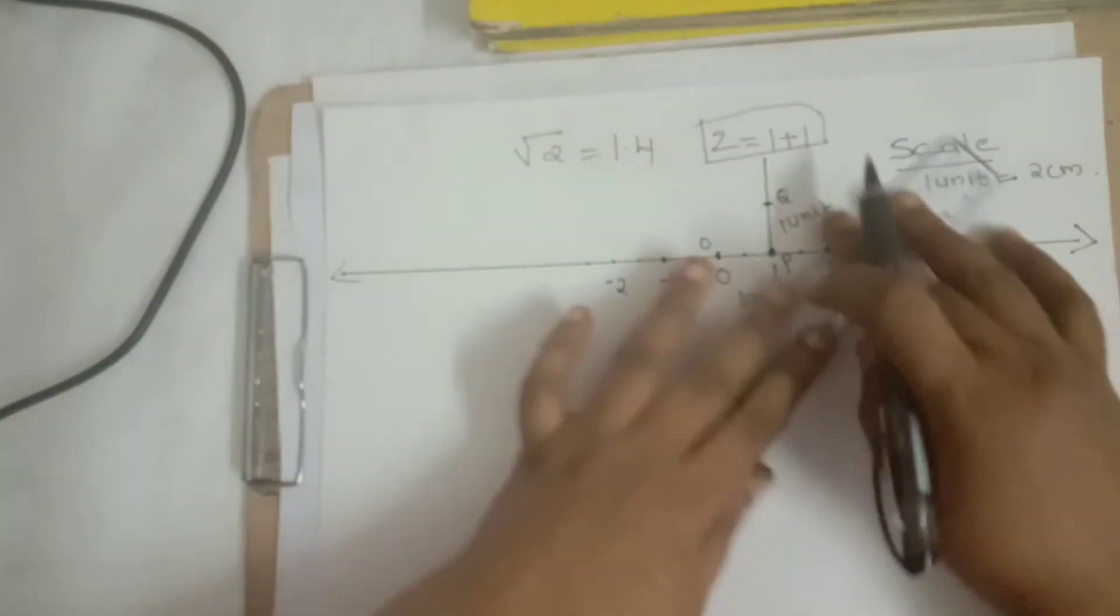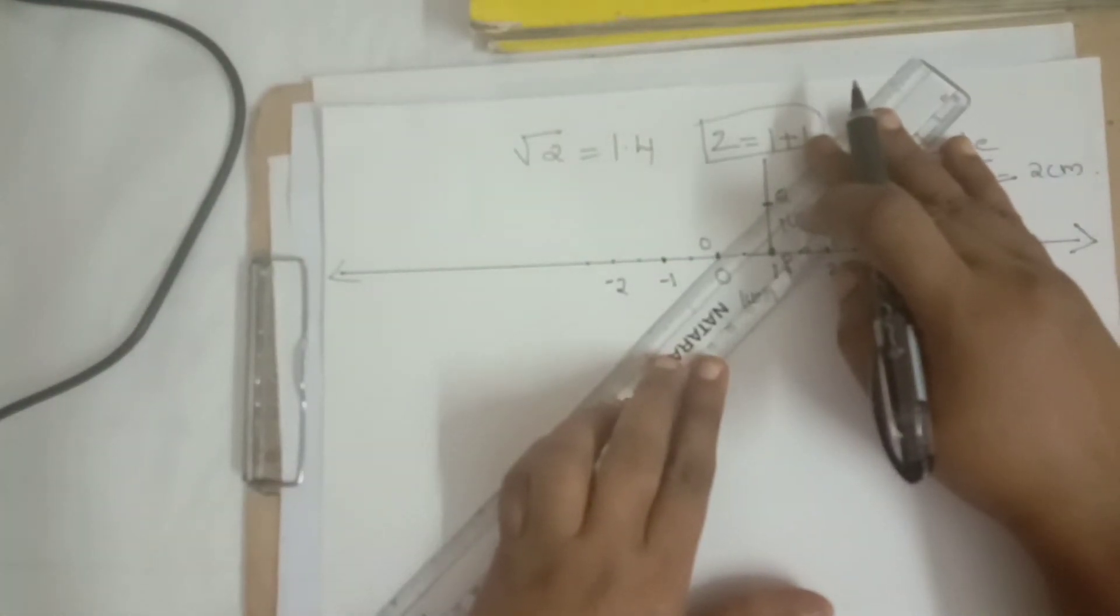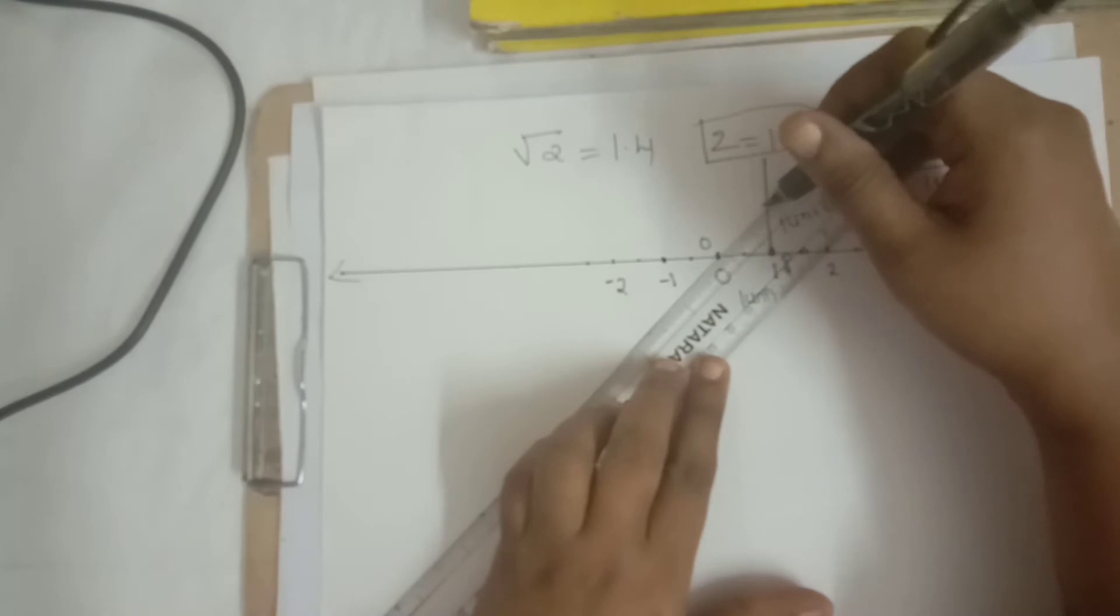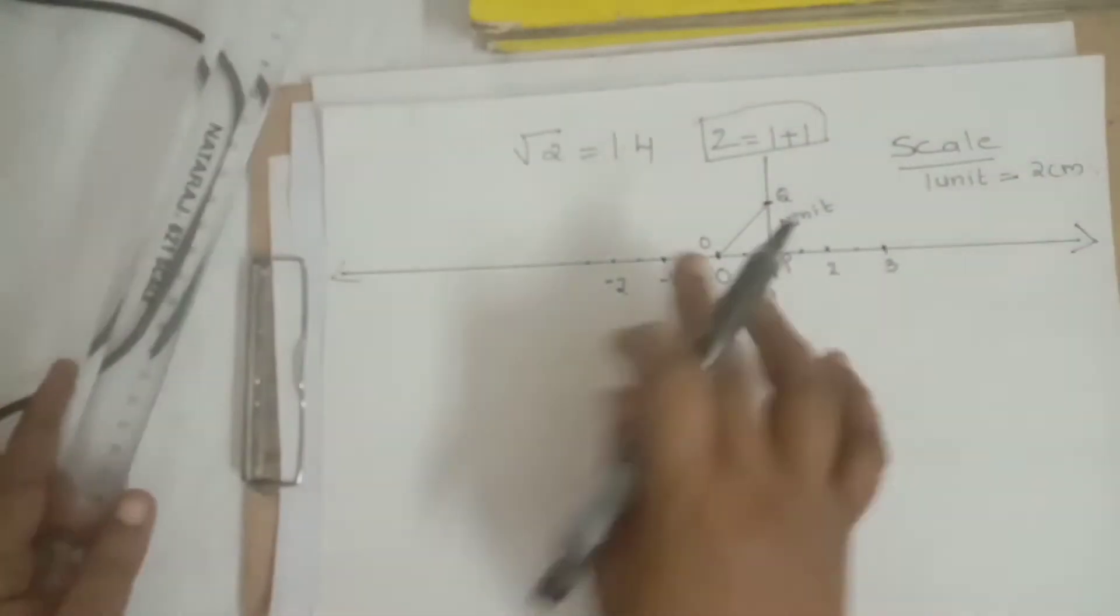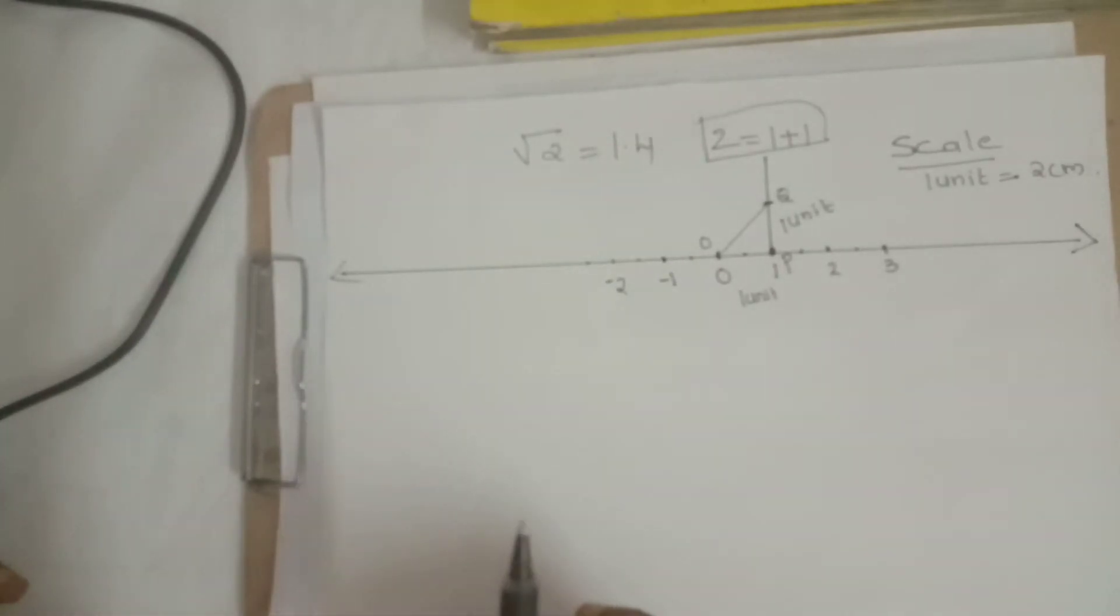Then joining O to Q. Join O to Q. Joining in this way, the value will be obtained. Here OQ represents √2.